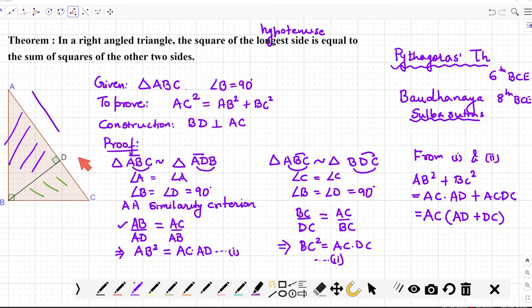So let us take AC common and you will get here AD plus DC. Now what is AD plus DC? Look at the diagram—if you look at the diagram, AD plus DC is AC itself. So hence this can be written as AC into AC, which is nothing but AC². So you can see AB² plus BC² is coming out to be AC², and this is what we wanted to prove. Hence proved.